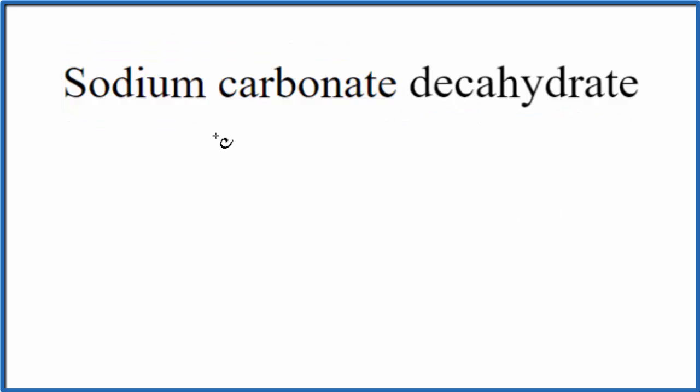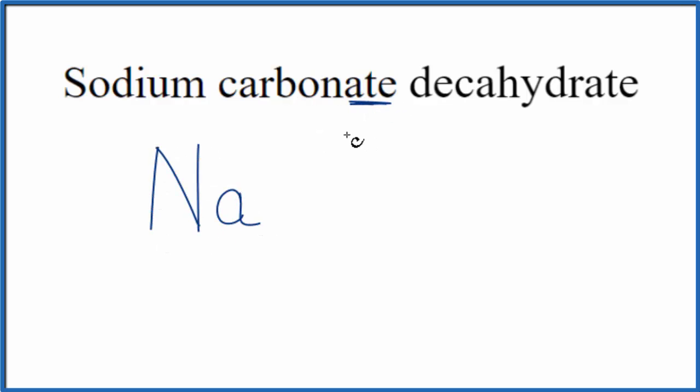So for sodium carbonate on the periodic table, the symbol for sodium is Na. The carbonate, you're not going to find anything with 'ate' on the periodic table. This is a polyatomic ion, and you either memorize that it's CO3 2-, or you look it up on a table if you're allowed.